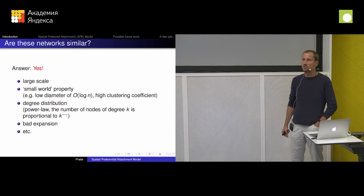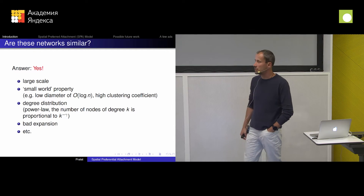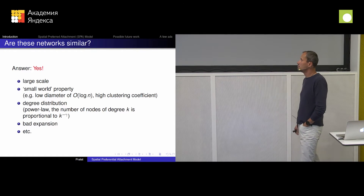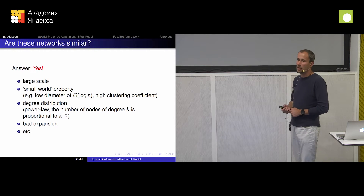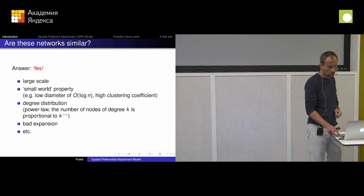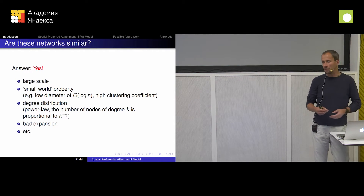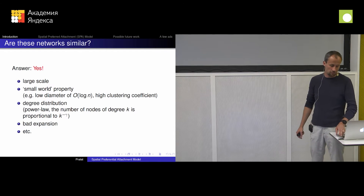Also, degree distribution is very similar in these networks — of course there are exceptions. But in many networks we see, for example, power law degree distribution, bad expansion, small clustering, large clustering coefficient, and so on. There are many properties, and we can try to come up with a model that tries to capture as many things as possible.